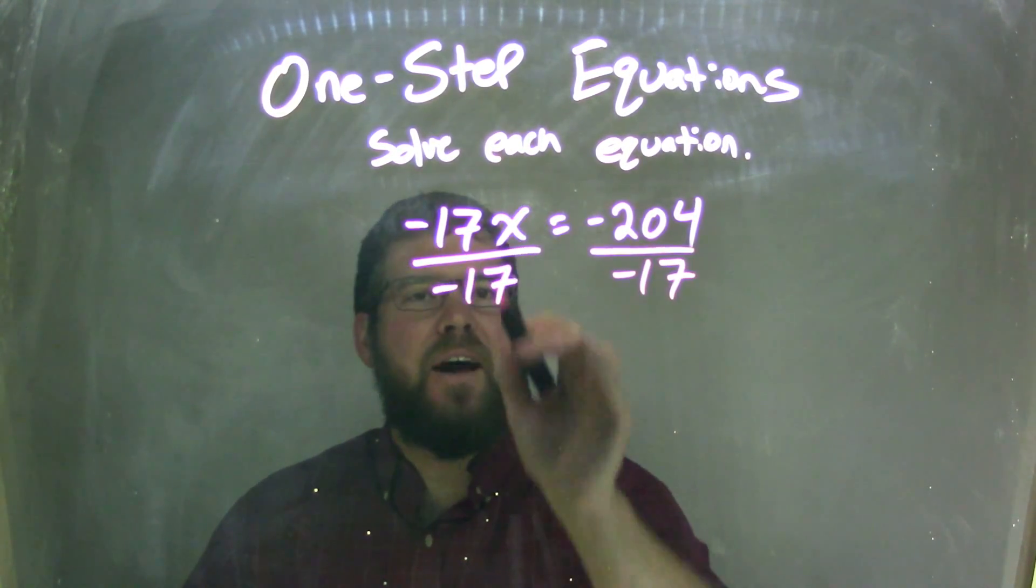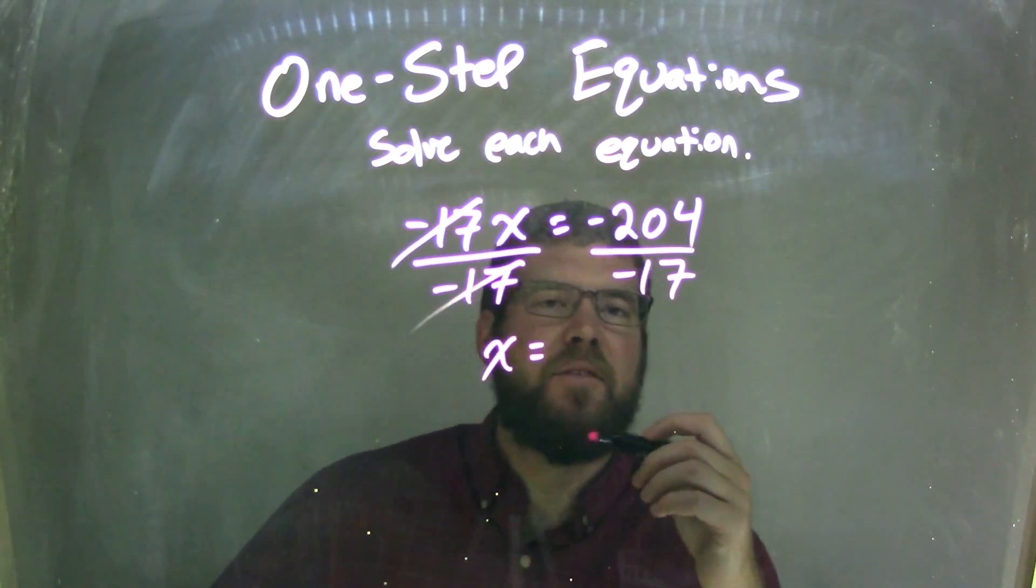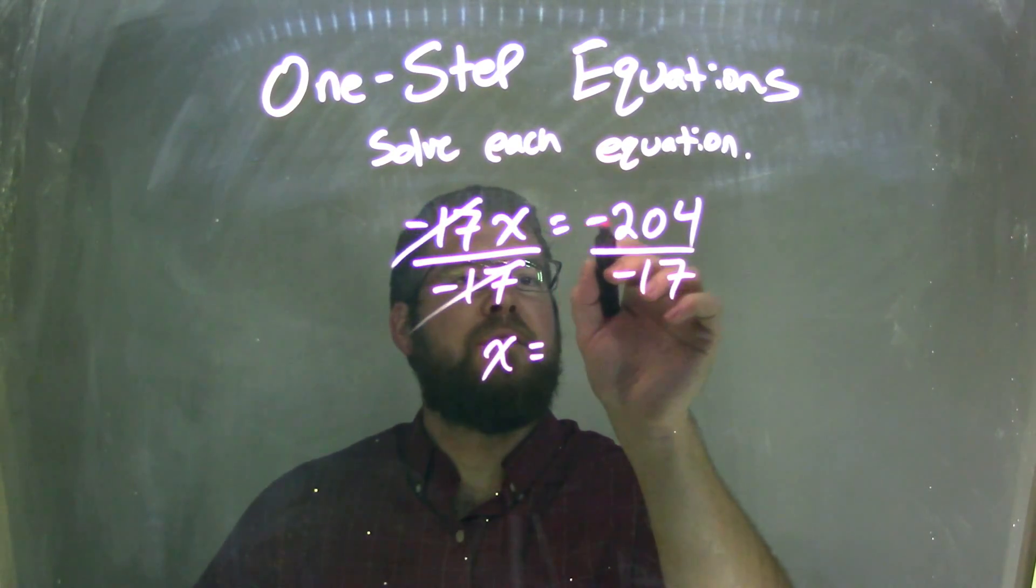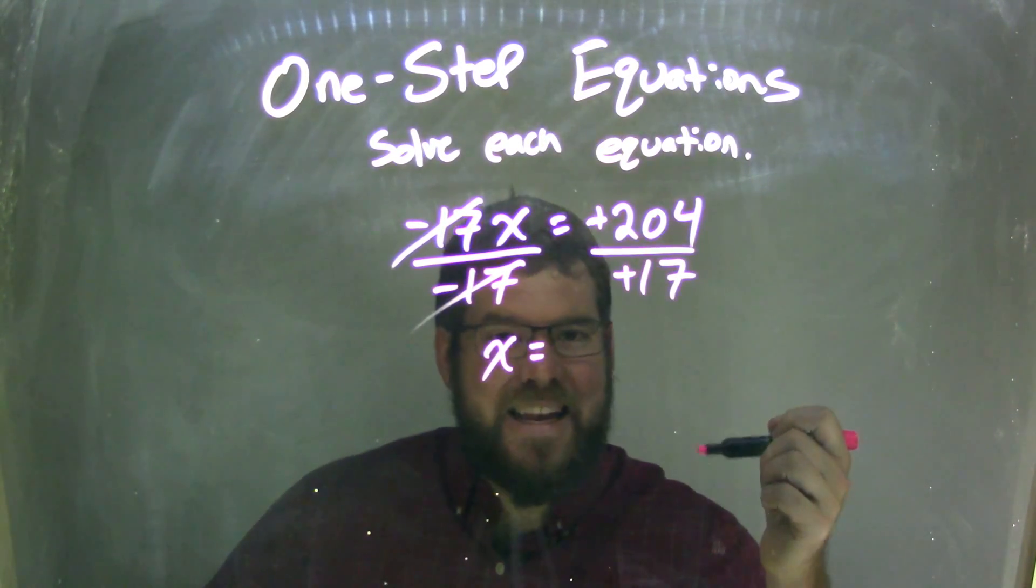On the left-hand side, it cancels out, so we're left with just x. The negative 17s cancel. And what's nice is the two negatives here on the right instantly will cancel out and be positive, right? Negative divided by a negative is a positive.